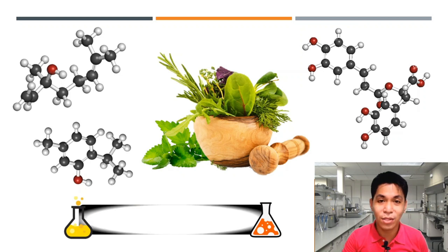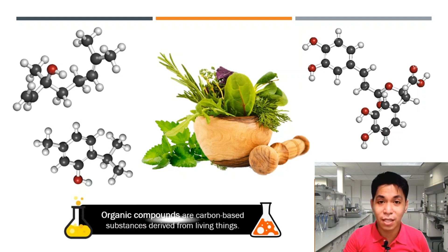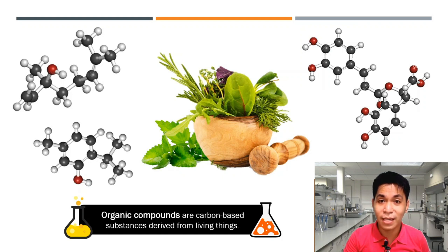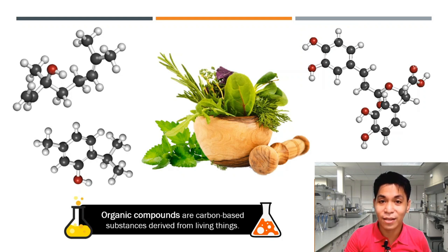Organic compounds are substances that are derived from living things — plants, animals. So they believed that organic compounds can only be extracted or produced from living things. This idea was changed when an unexpected event occurred.